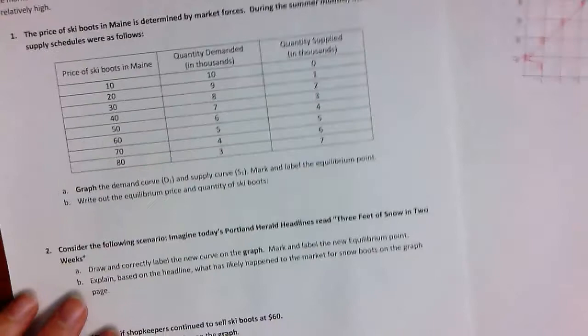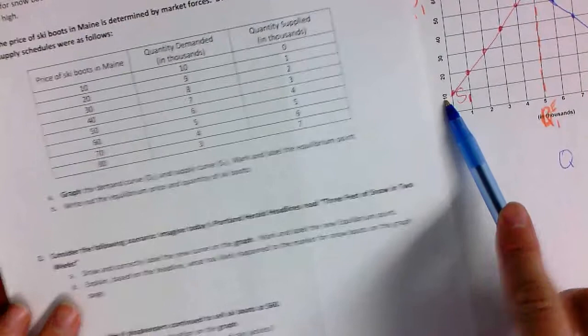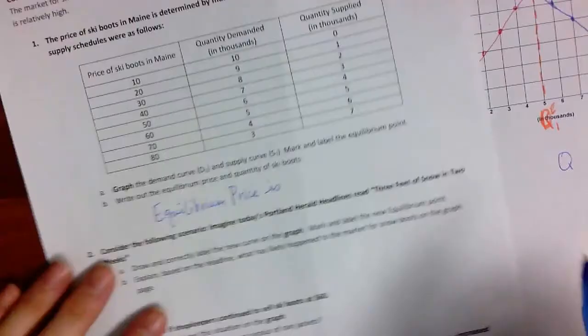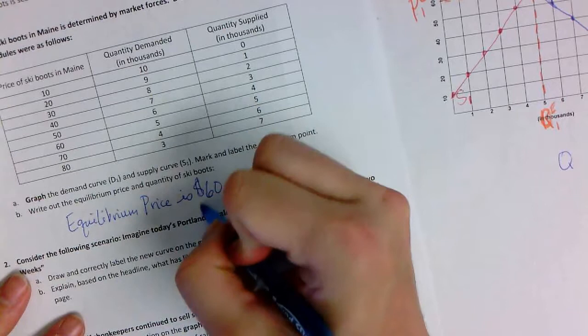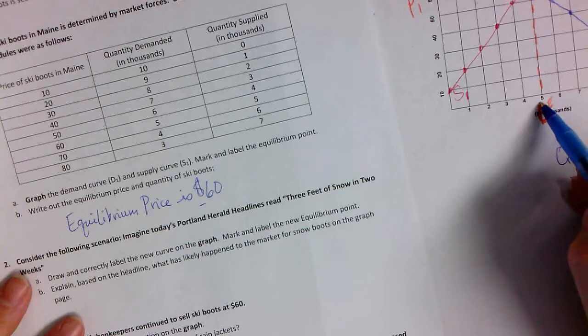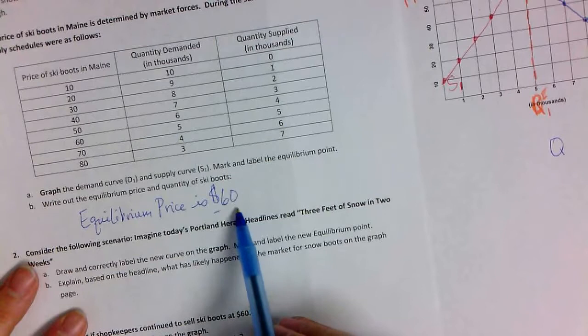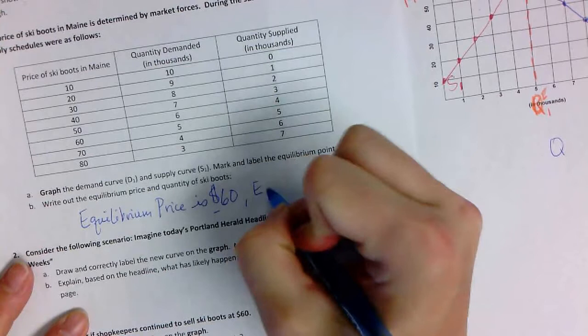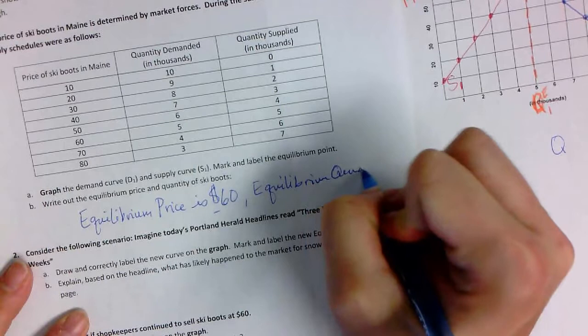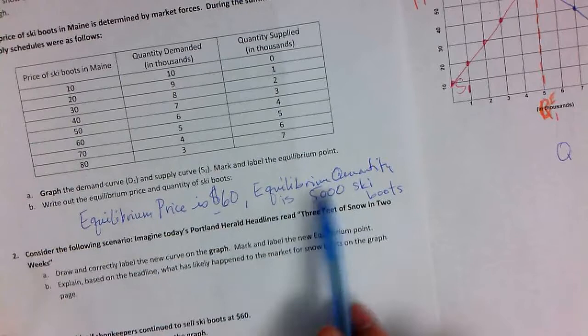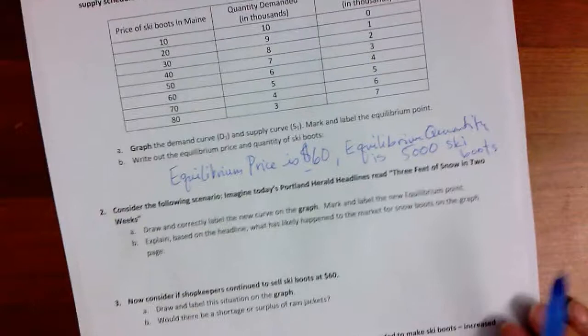Now, write out the equilibrium price and quantity of ski boots. So, this is where they check whether or not you can read a graph. Do you know what that means? Are you going to write it out? Do you know what this means? So, here you write equilibrium price is $60. Don't forget that dollars. That's worth a point. Equilibrium quantity. Now, if you just write 5, you're going to lose points. You're not going to get this point. This is not 5, it's 5, what? It's 5,000, and it's 5,000 ski boots. Equilibrium quantity is 5,000 ski boots. You need to write all that out or you will not earn those points on the final.